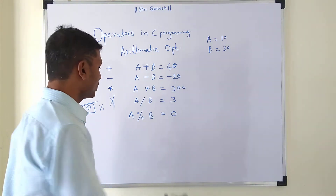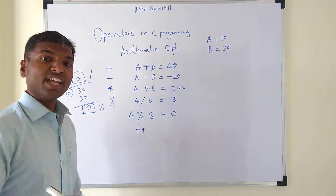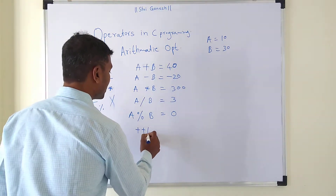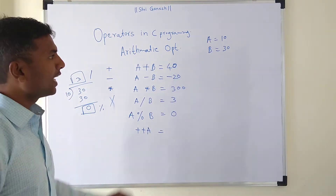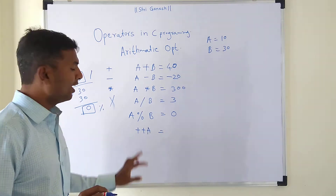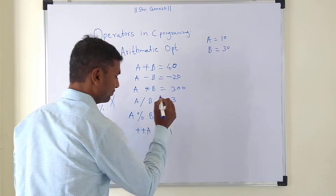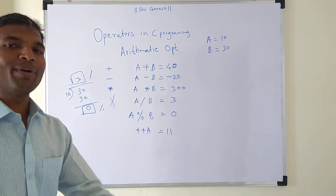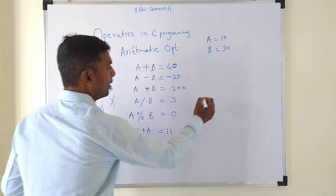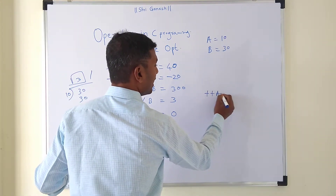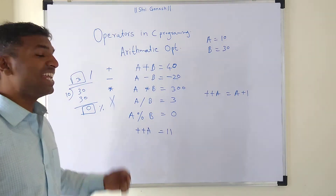There are two more arithmetic operators. The first is called the plus plus operator, or increment operator. So if we write plus plus a, and the current value of a is 10, when we use plus plus a it will become 11, because it is incremented by 1. Plus plus a is nothing but a plus 1. So it is called the increment operator.